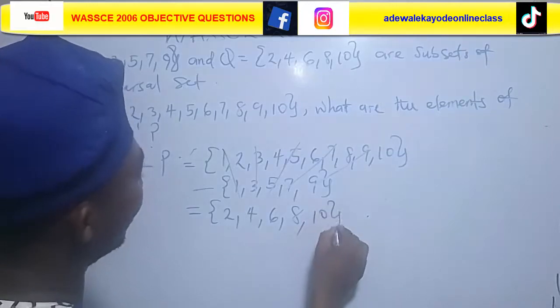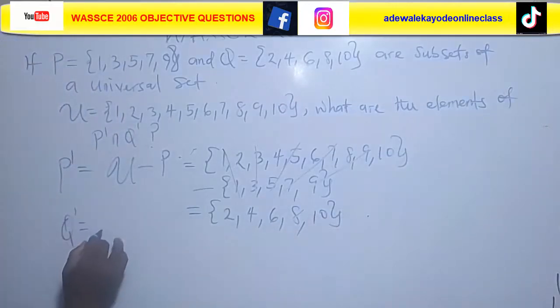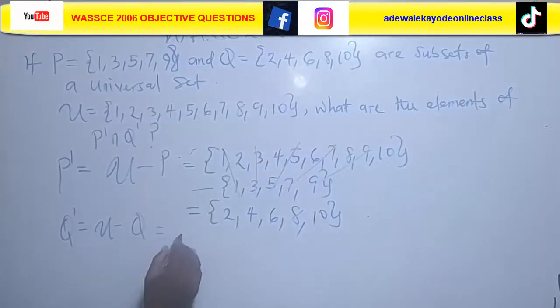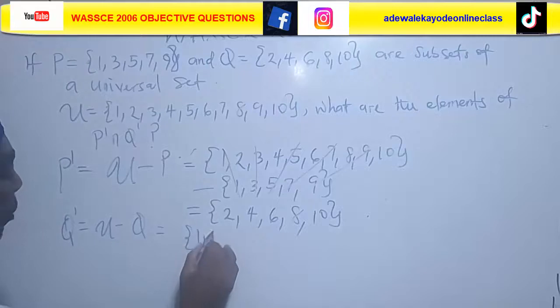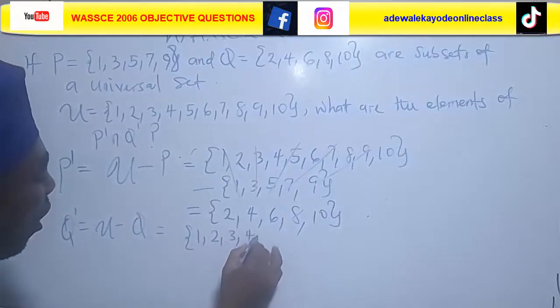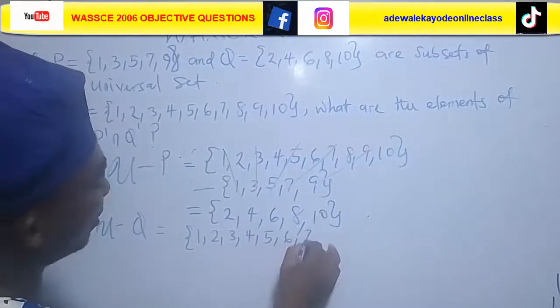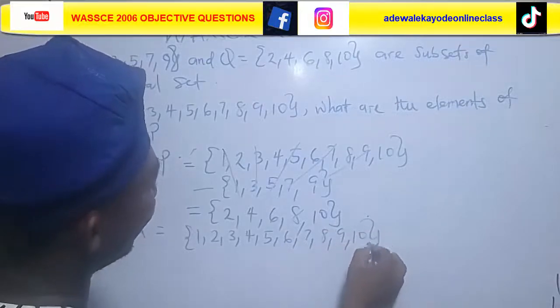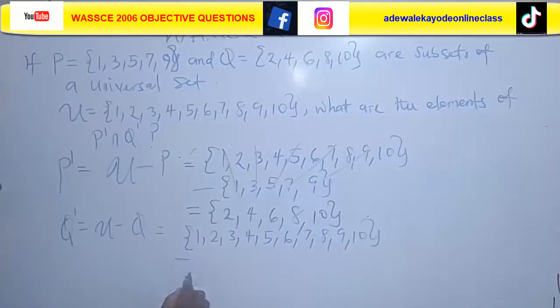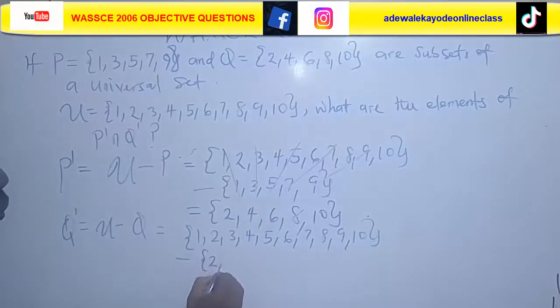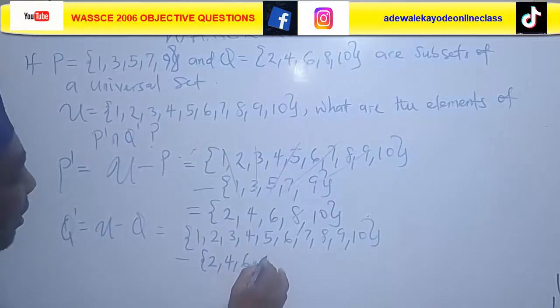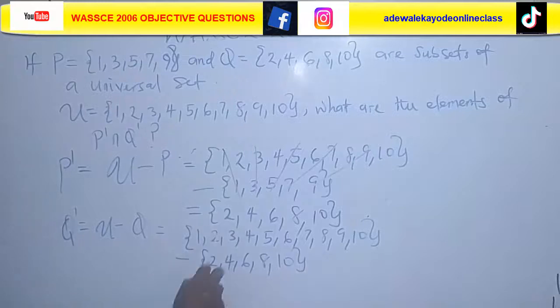Q complement, that is the universal set, and take Q away. Universal set {1, 2, 3, 4, 5, 6, 7, 8, 9, 10}, then we are taking Q away. What is our Q?